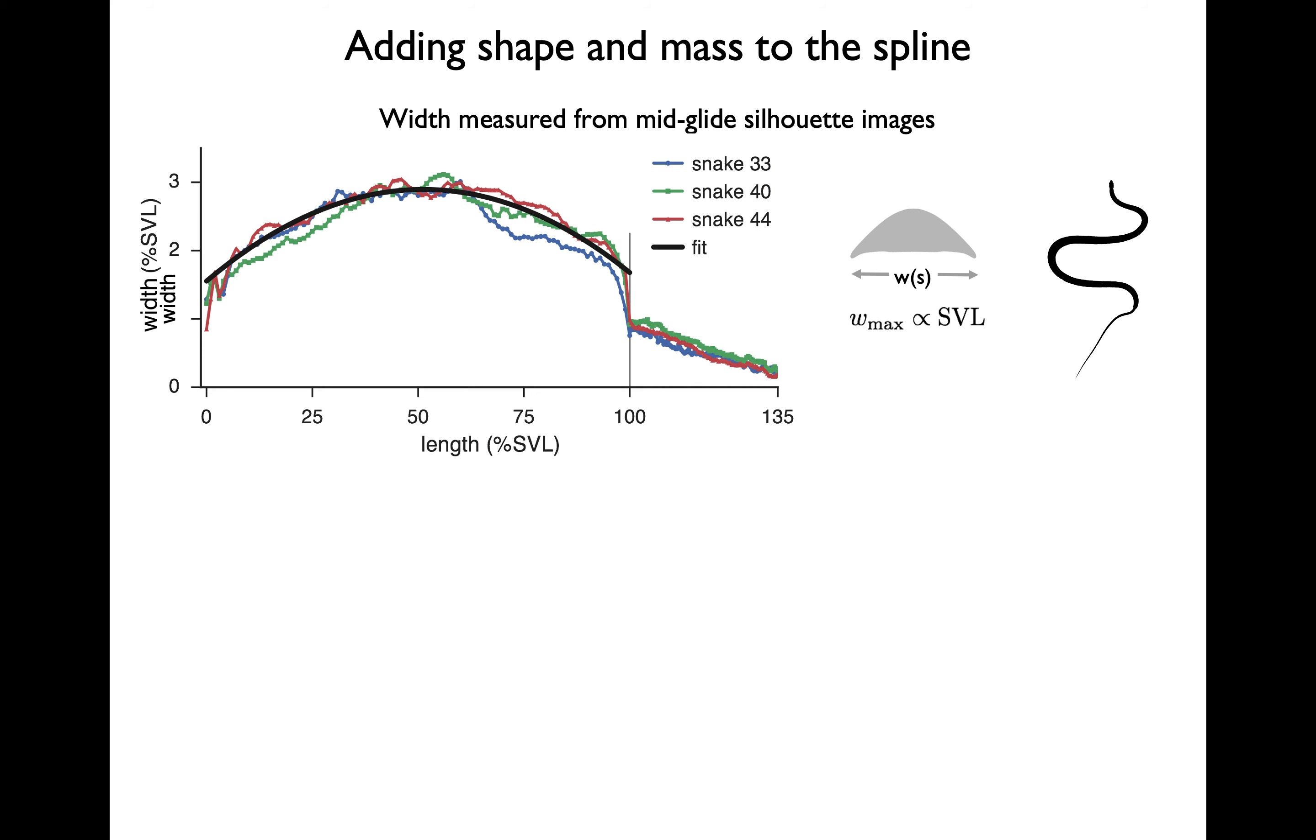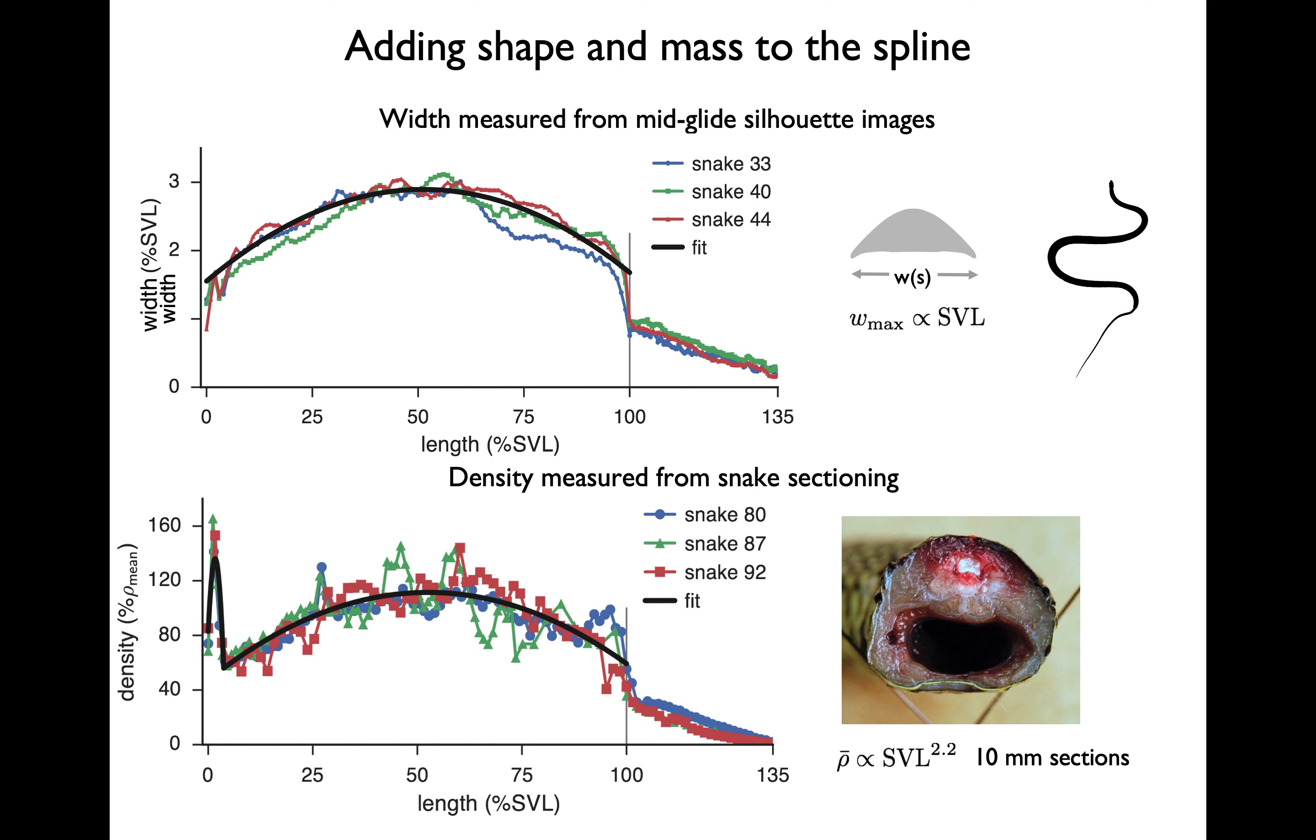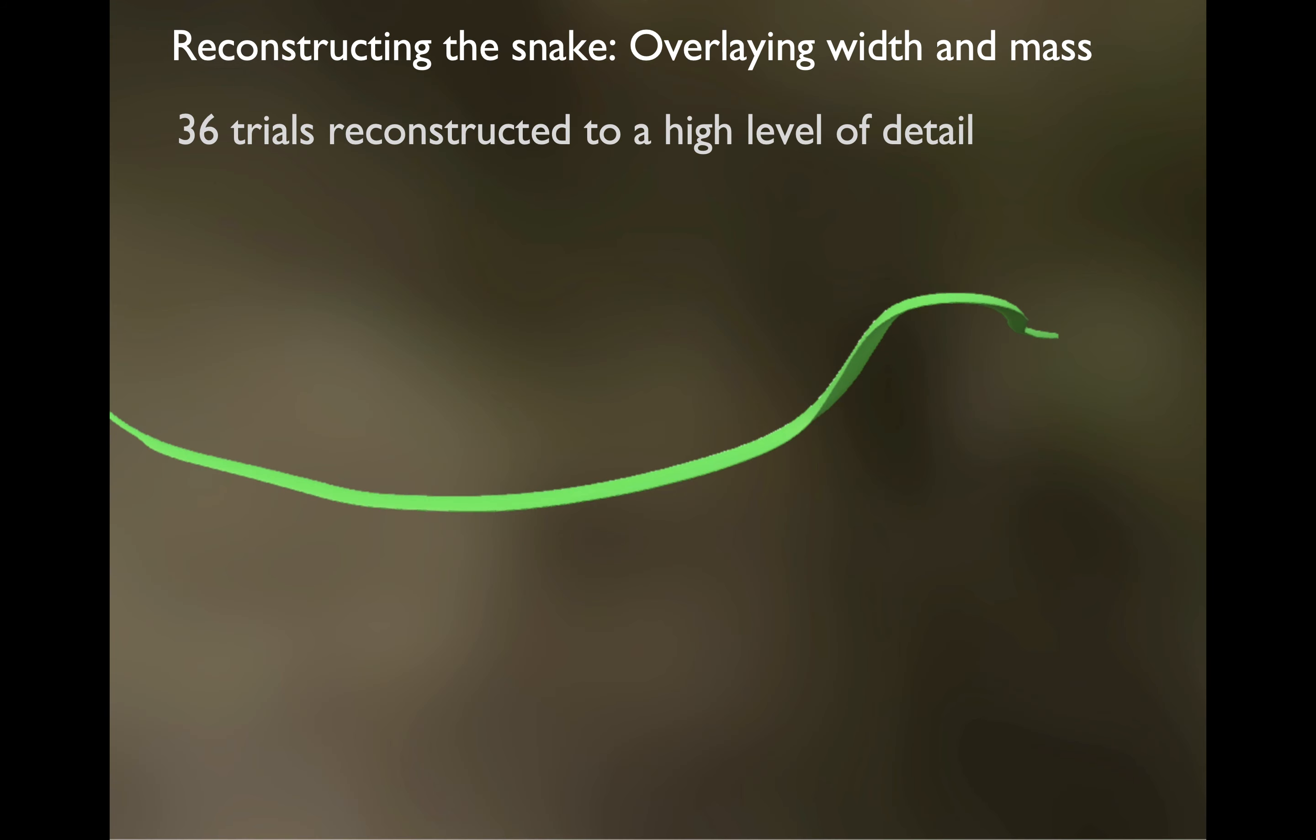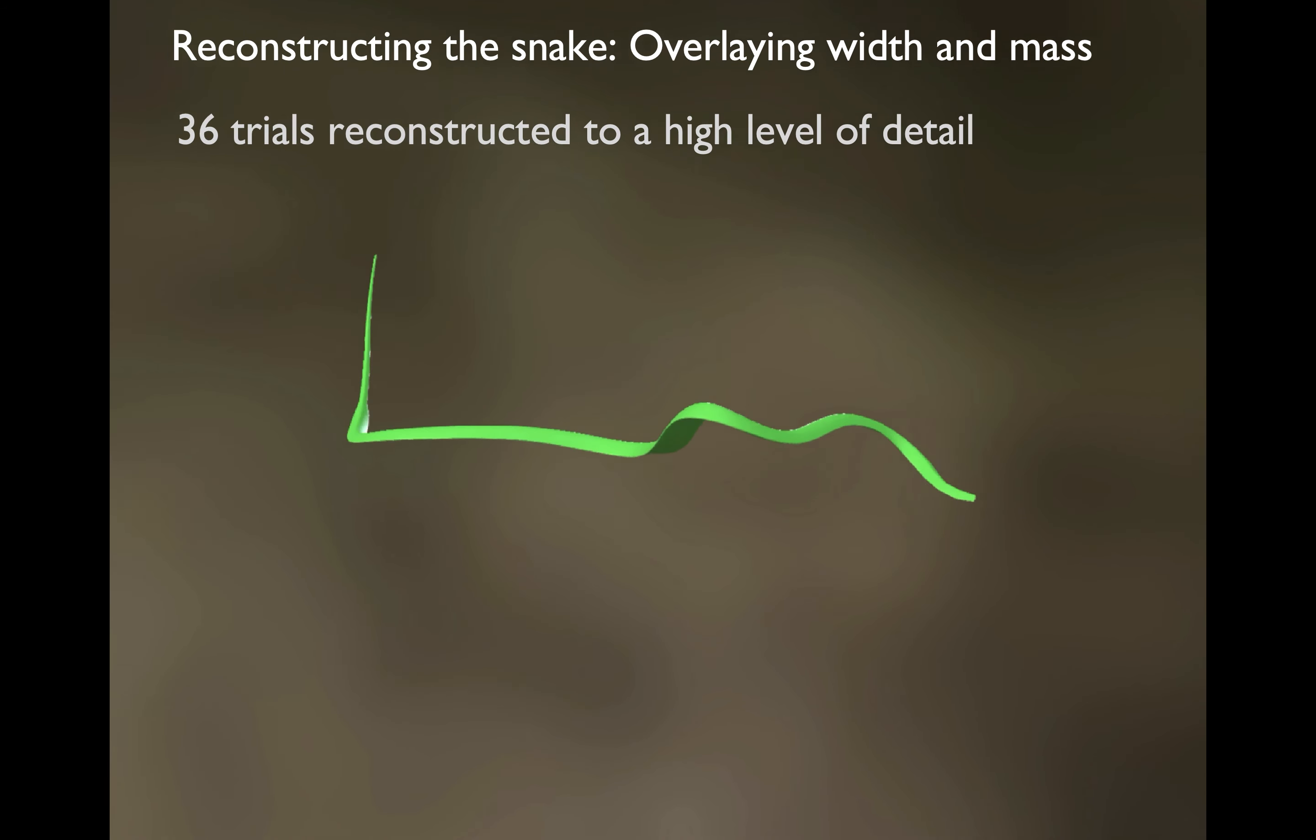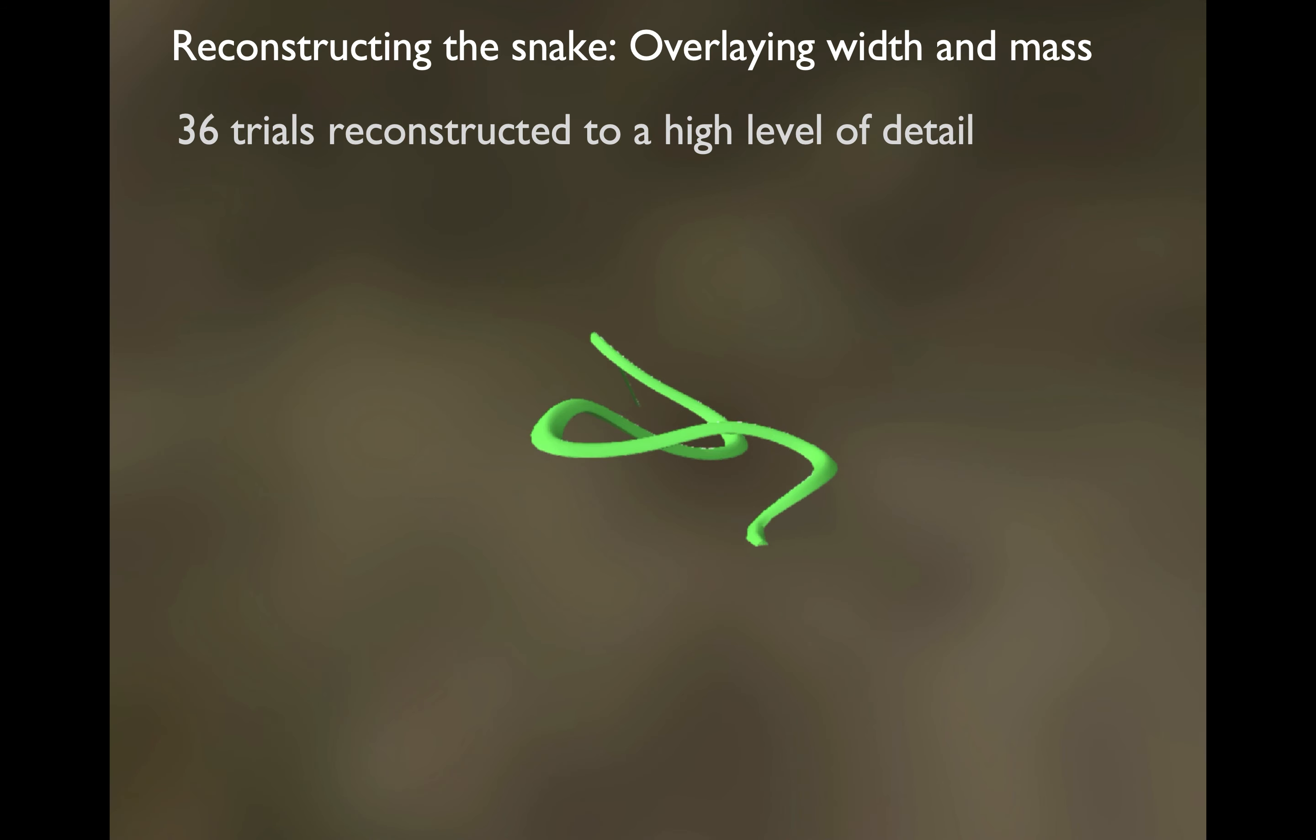Next, we add shape and mass to the animal. To do this, we measure the width of the snakes from mid-glide silhouette images and the mass distribution from snake sectioning. As you can see, both are nominally parabolic, peaking at the center of the animal, the 50% mark of the snout to vent length. We overlay the width and mass to reconstruct the snake. We have 36 trials to this level of detail.